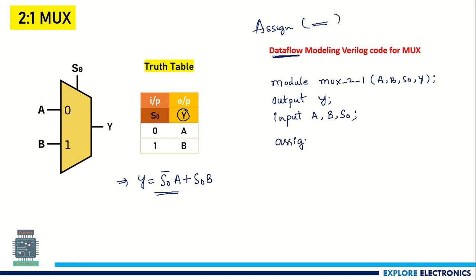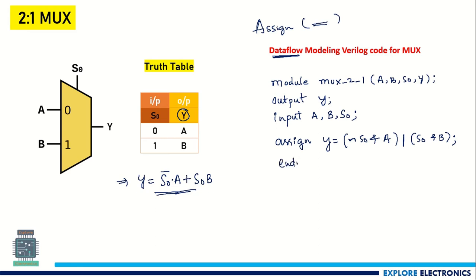We write: assign Y = (~S0 & A) | (S0 & B). Here, the negation operator generates S0-bar, '&' is the AND operator, and '|' is the OR operator in Verilog. After the logical expression is written, we end the module with the 'endmodule' keyword. This is the complete Verilog code in data flow modeling representing the 2-to-1 multiplexer.